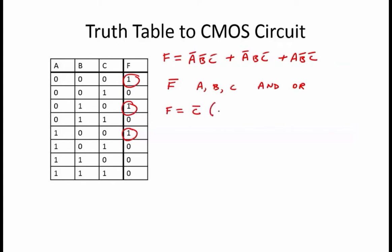Factoring out NOT C, that equals NOT C anded with NOT A, NOT B, or NOT A, B, or A, NOT B.